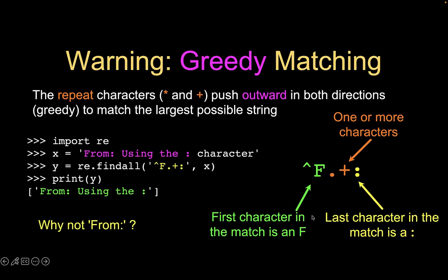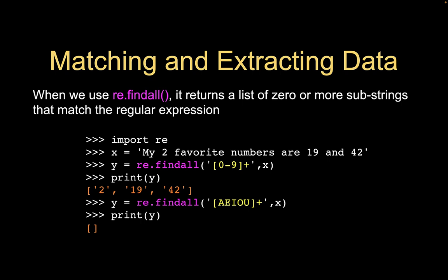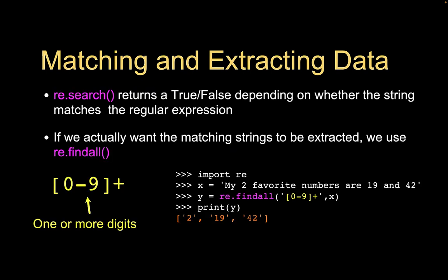re.findall() returns a list of zero or more substrings that match the regular expression. If you search for capital vowels [AEIOU]+ and there are none in the string — the only uppercase letter is M — you get back an empty list. For truth value testing: if the list has contents it's true, if it's empty it's false. So you can use an if statement on the result of re.findall() just as you would with re.search().